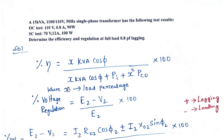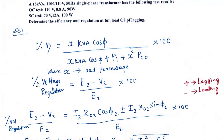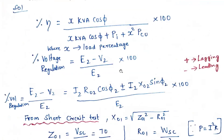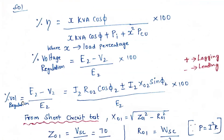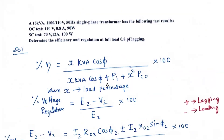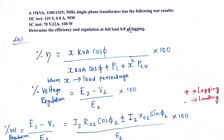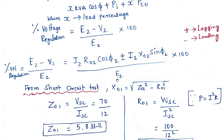Since it is full load, x equals 1. The percentage voltage regulation formula is: VR = (E₂ - V₂) / E₂ × 100, which equals (I₂R₀₂ cos φ₂ ± I₂X₀₂ sin φ₂) / V₂ × 100. For lagging power factor, we take the plus sign; for leading power factor, we take the minus sign.